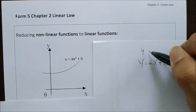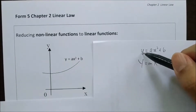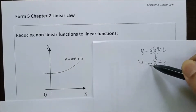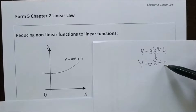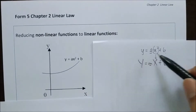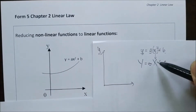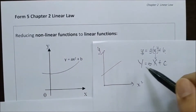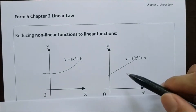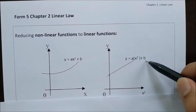If we rewrite y equals ax squared plus b and compare it to the straight line equation, we find that if y is the y-axis and x squared is the x-axis, then the value of a will be the gradient and the value of b will be the y-intercept. So from the values of y and x, we can plot the graph again by plotting y against x squared. We should get a straight line, from which we find the gradient — the value of a — and the y-intercept — the value of b.